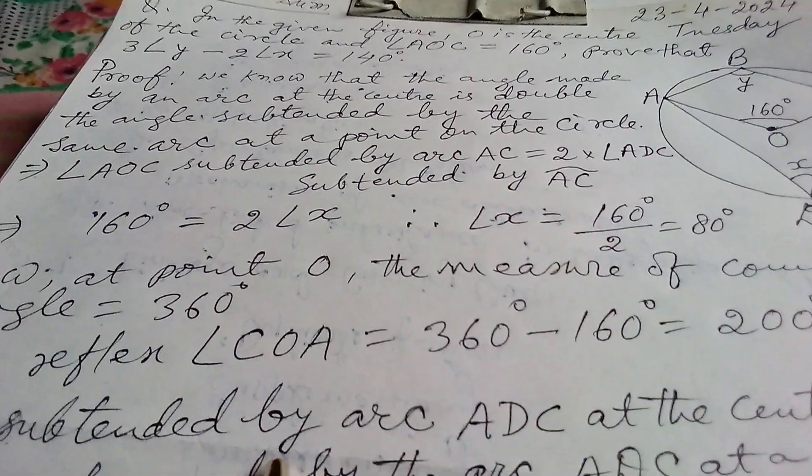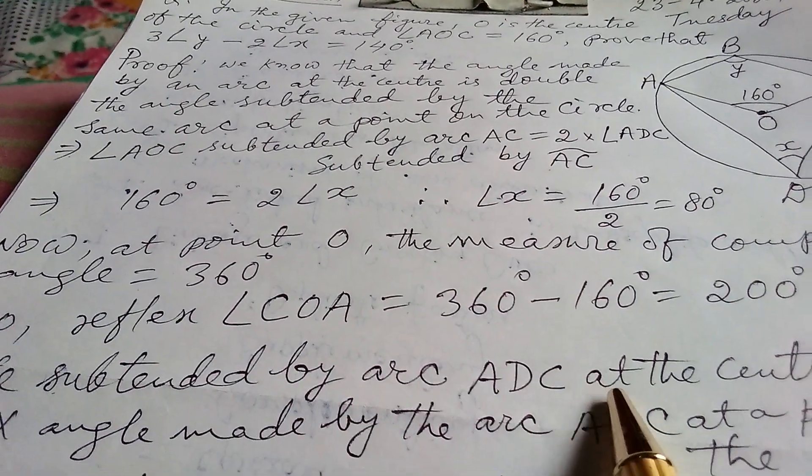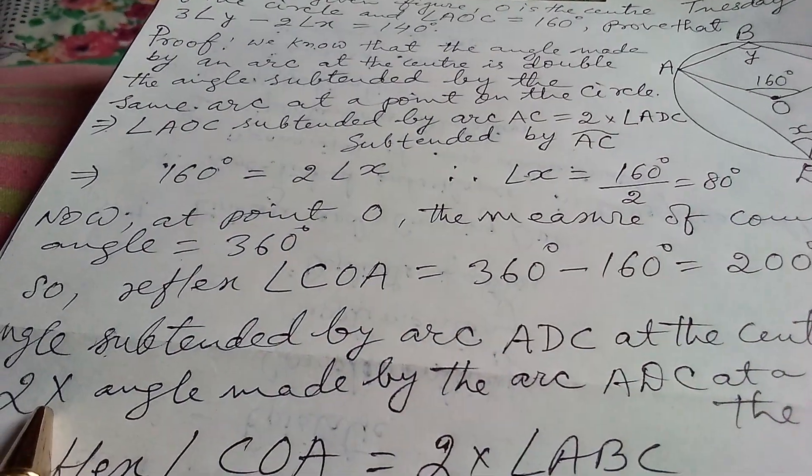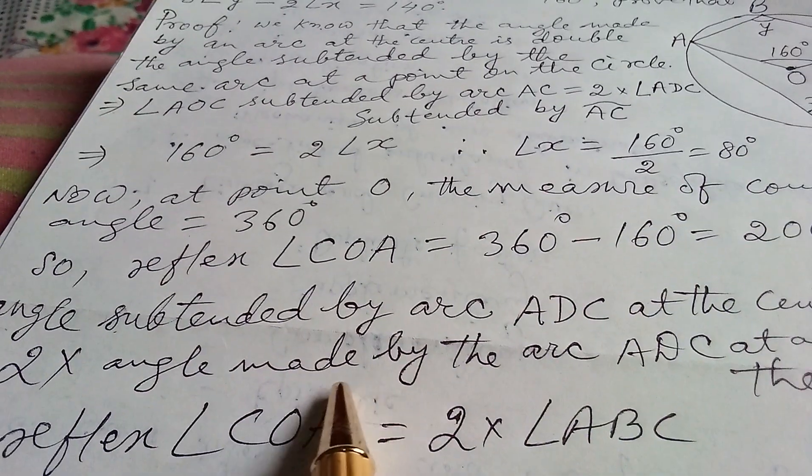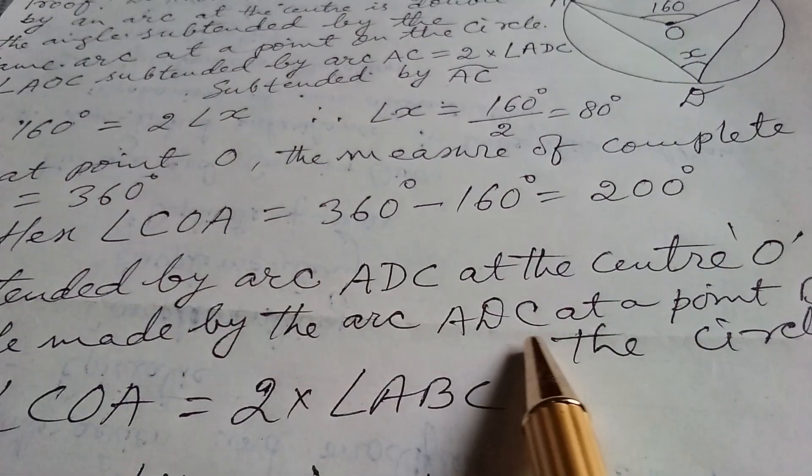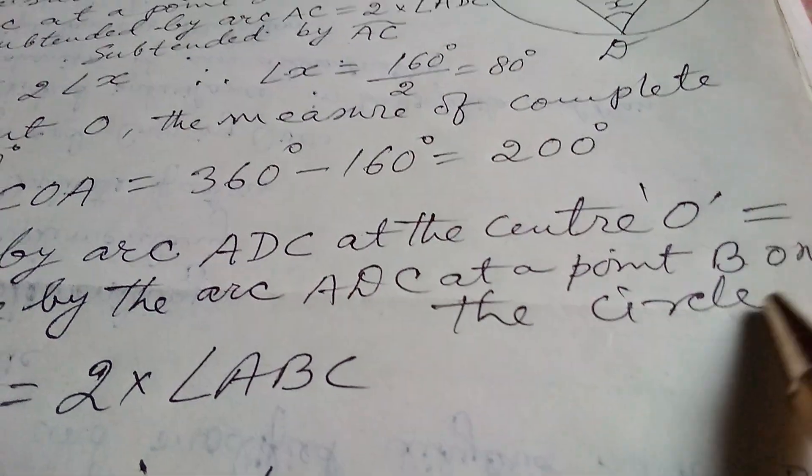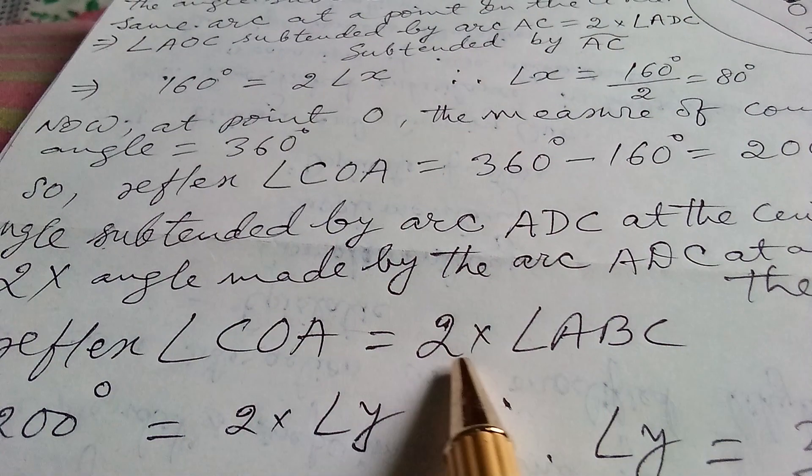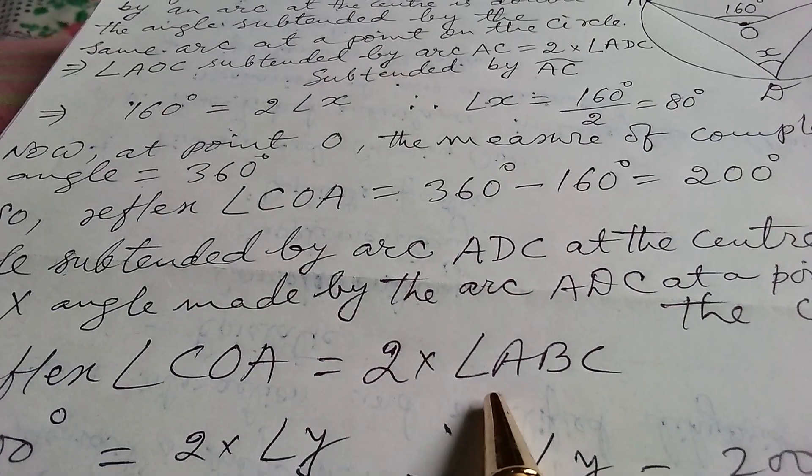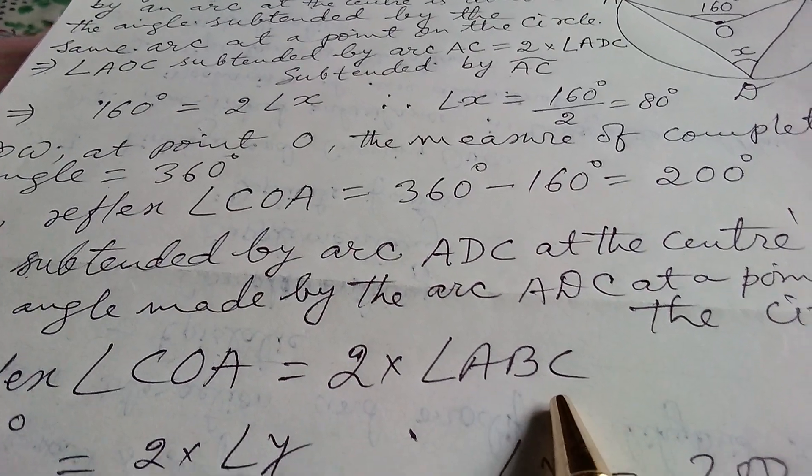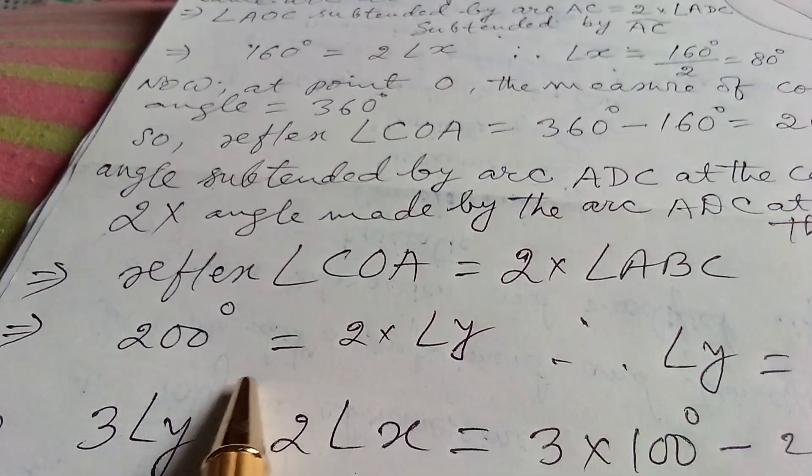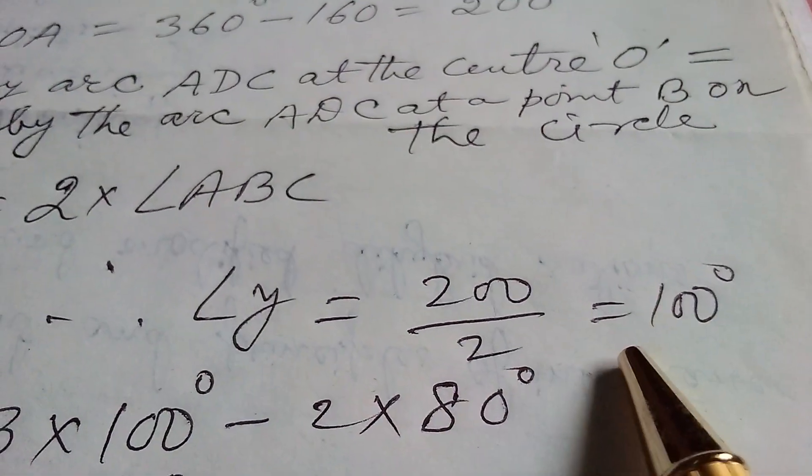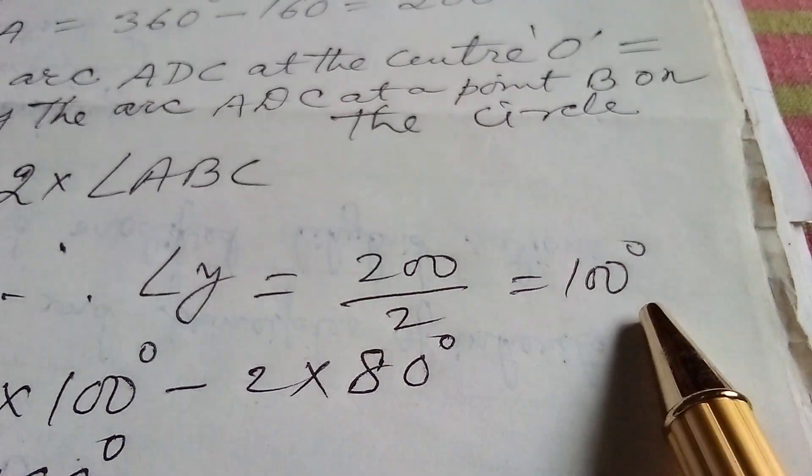Now, angle subtended by arc ADC at the center O is equals to twice the angle made by the arc ADC at a point B on the circle. This implies, reflex angle COA equals to twice angle ABC. This implies 200 degrees equals to twice angle Y and therefore, angle Y is equals to 200 degrees by 2, that is equals to 100 degrees.